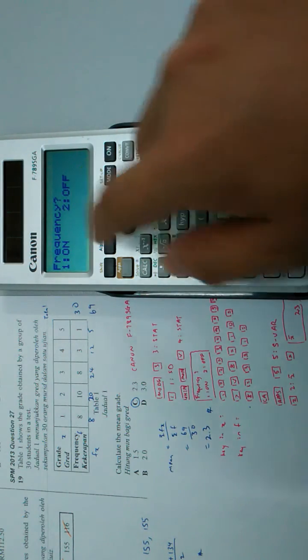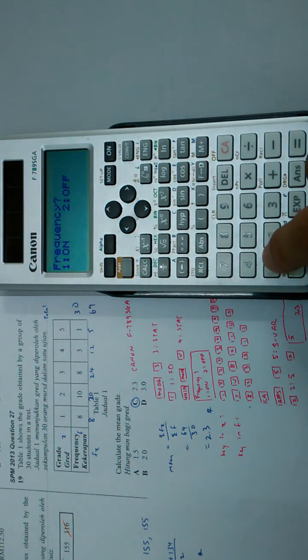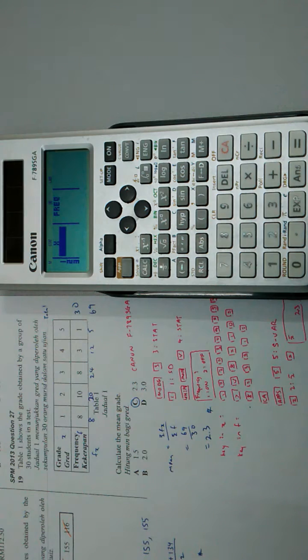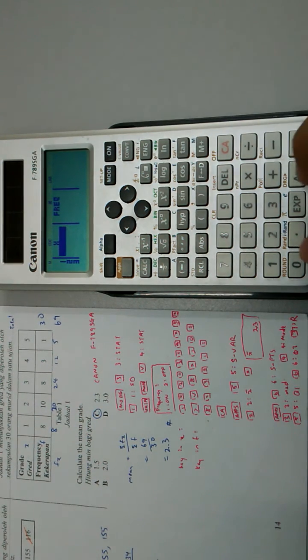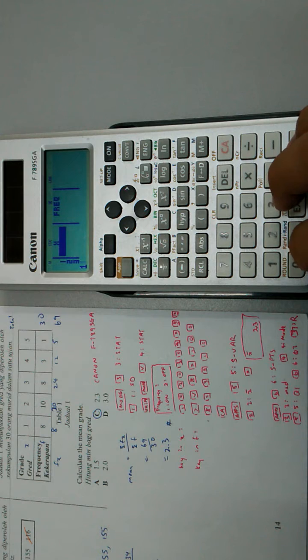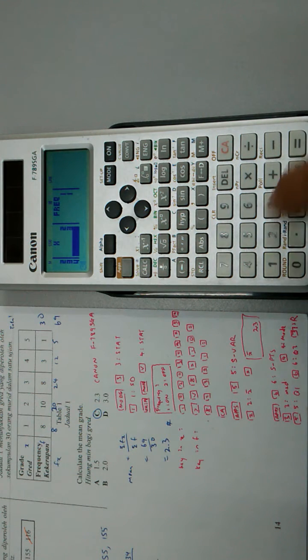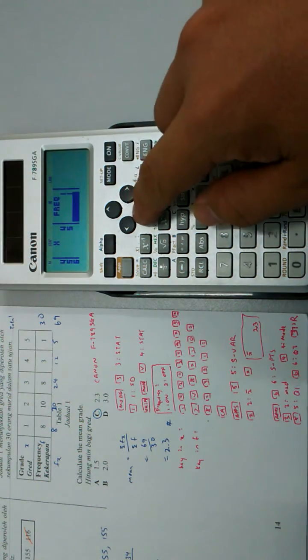By default, the frequency is off. So we press 1, and now you can key in the data: 1 equal, 2 equal, 3 equal, 4 equal, 5 equal. After I key in the x values, then I go to key in the frequency.